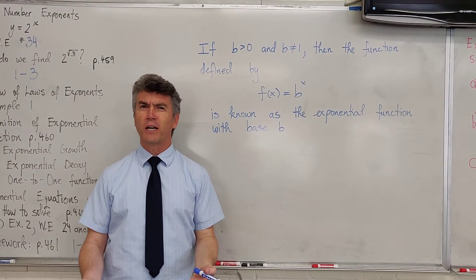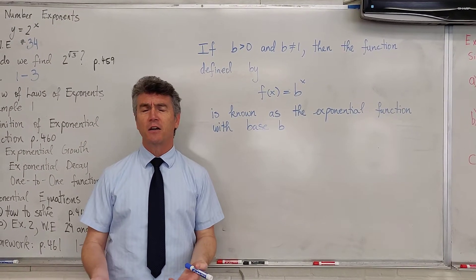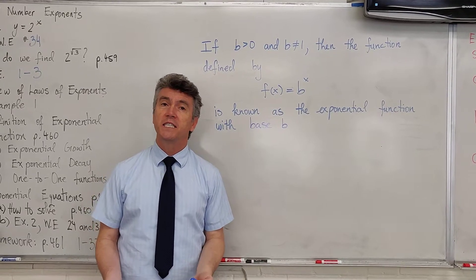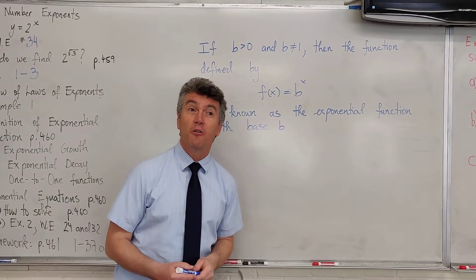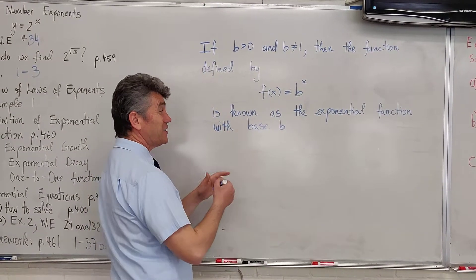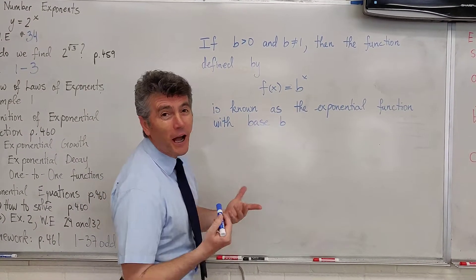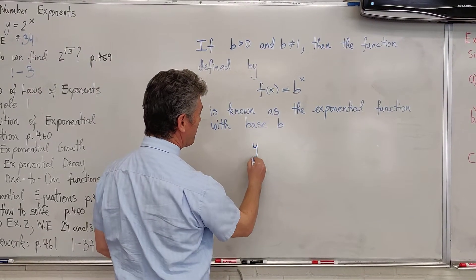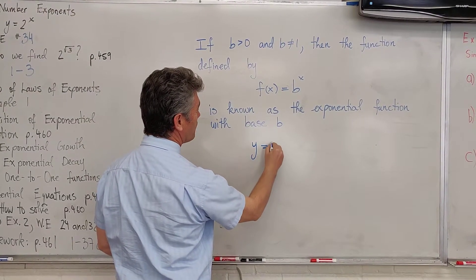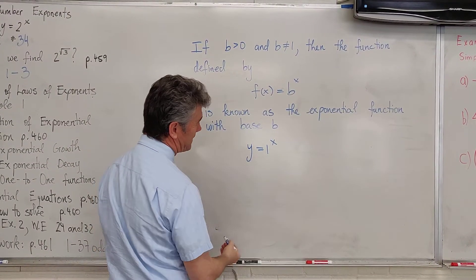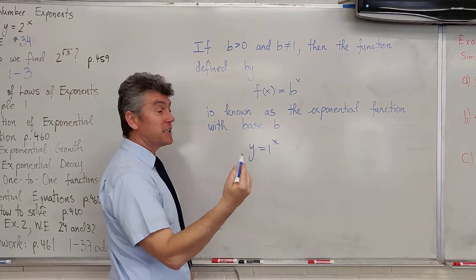First of all, we're going to analyze the question: why is it that b cannot equal 1? Let's take a look at the function y equals 1 to the x and make a table.